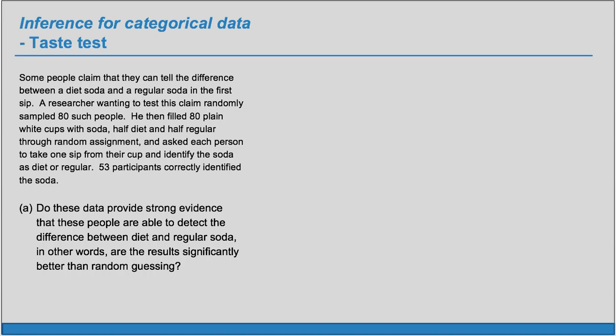Some people claim that they can tell the difference between a diet soda and a regular soda in the first sip. A researcher wanting to test this claim randomly sampled 80 such people. He then filled 80 plain white cups with soda, half diet and half regular through random assignment, and asked each person to take one sip from their cup and identify the soda as diet or regular. 53 participants correctly identified the soda.